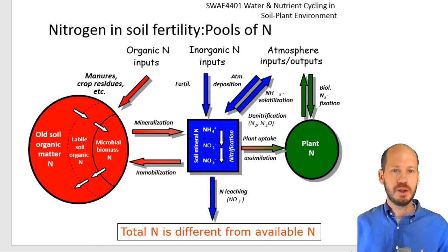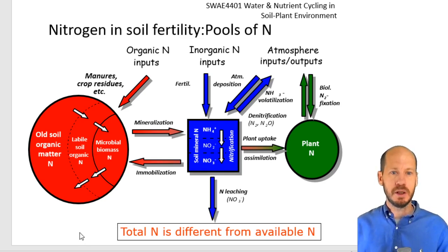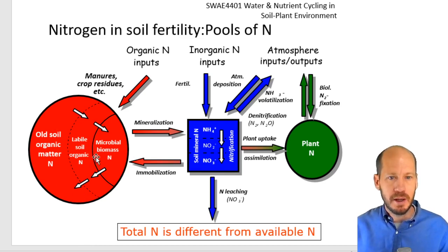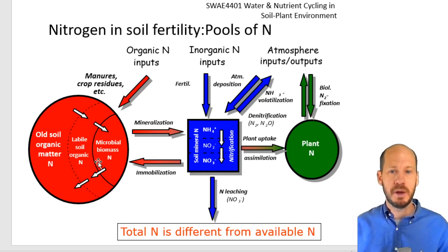In describing the nitrogen pools in soil, we have to keep in mind that the majority of the nitrogen in soil is locked in the organic matter. This pool is called the organic nitrogen. You can have up to 95% to 98% of the soil nitrogen in the organic matter.